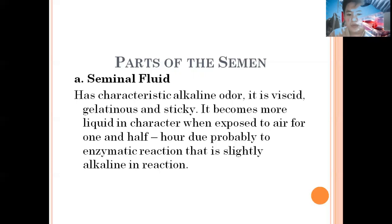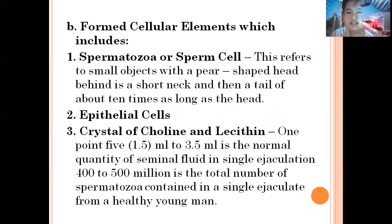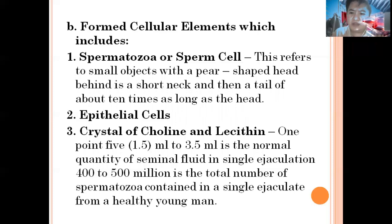Among the cellular elements of semen, we have spermatozoa, also called sperm cells. The sperm cell is a spear-shaped small object whose tail is 10 times longer than its head. In basic terms we call it a tadpole, but in legal terminology and forensic chemistry we term it as sperm cell or, in medical terms, spermatozoa.